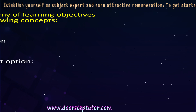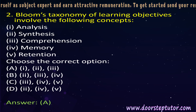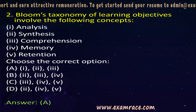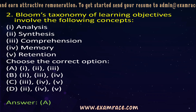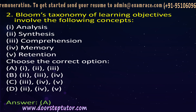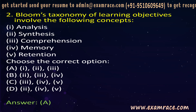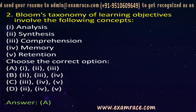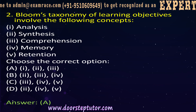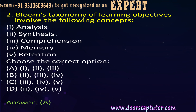The next question is: Bloom's taxonomy of the learning objective involves the following concepts. Bloom's taxonomy is used to define the complexity as well as the specificity of the learning objective. According to him, the learning objective has three domains: the cognitive domain, the affective domain, and the psychomotor domain.